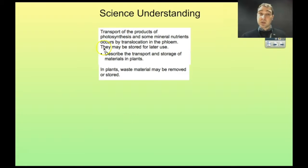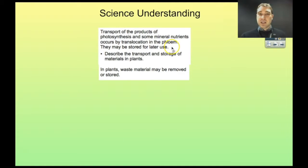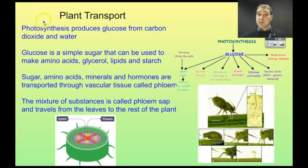We're going to look at transport of the products of photosynthesis, and some mineral nutrients occurs by translocation in the phloem. They may be stored for later use. So, we'll describe the transport and storage of materials in plants. In plants, waste material may be removed or stored.